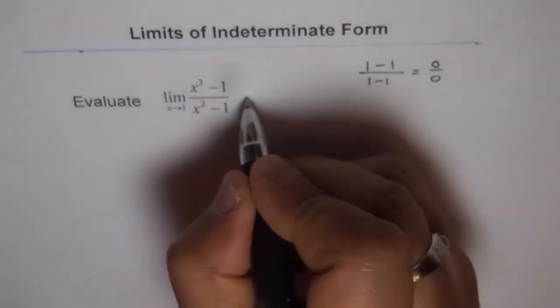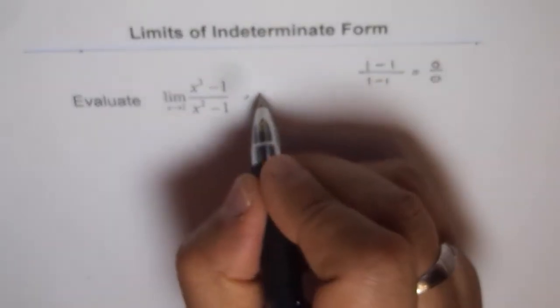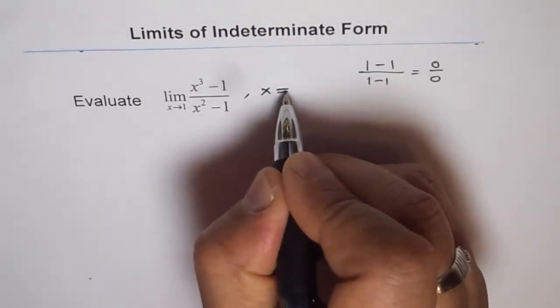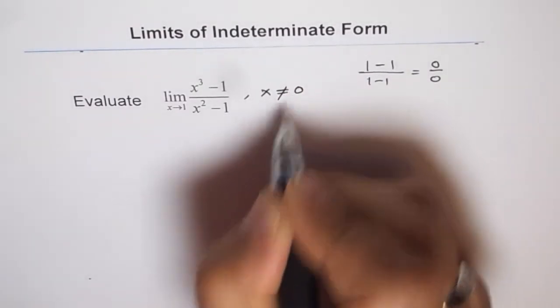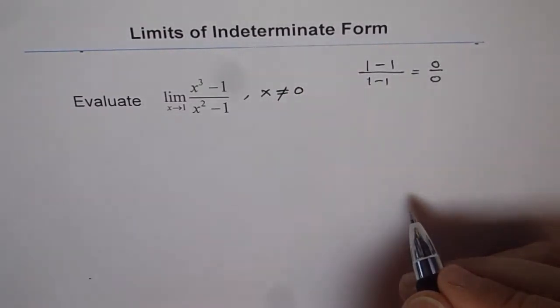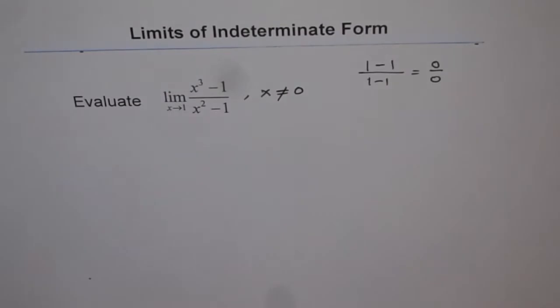0 over 0 says that the function is not defined as x equals 0. So x equals 0 is not in our domain. But can it have a limit at that point? Yes, it can. Since limit is not the value of function at that point, limit is the value which a function is approaching as we approach the limiting value. So it can still approach that value.